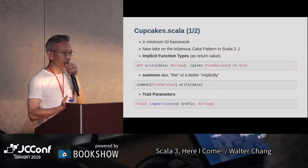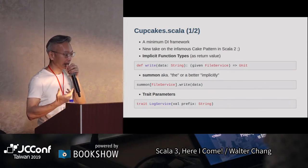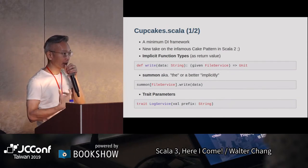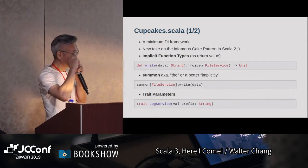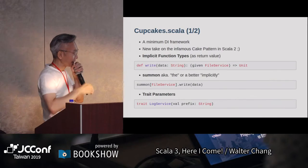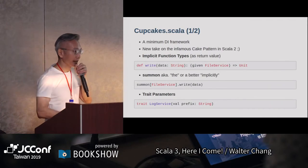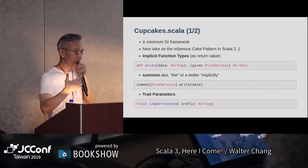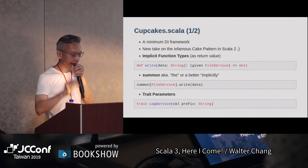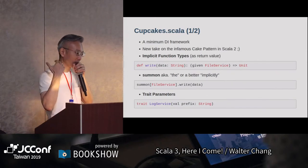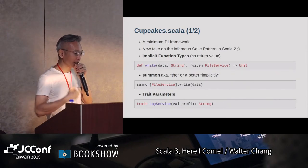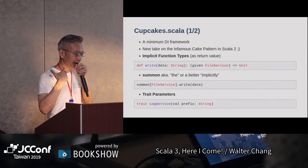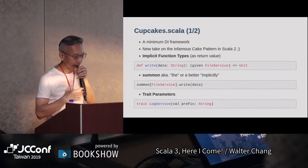我們知道過去Scala 2有一個cake pattern，用cake pattern來做DI framework。只是那個時候它有一些不好的地方，大家可以google一下。這一個cupcake呢，就是用來做類似cake pattern所要做的事情，可是更簡單一些。